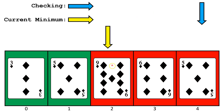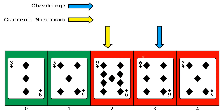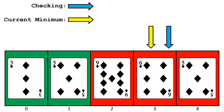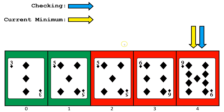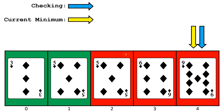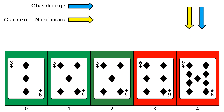Next, we set the current minimum to the beginning of the unsorted portion of the list, in this case index 2. Then we check index 3 to see if the value is smaller than the current minimum, which it is, so we move current minimum to index 3. Then we check, is index 4 smaller than the current minimum? It is, so we move current minimum to index 4. We've reached the end of the list, so we swap the current minimum index with the beginning of the unsorted portion of the list. Now we've completed sorting up through index 2, so we can mark it green.